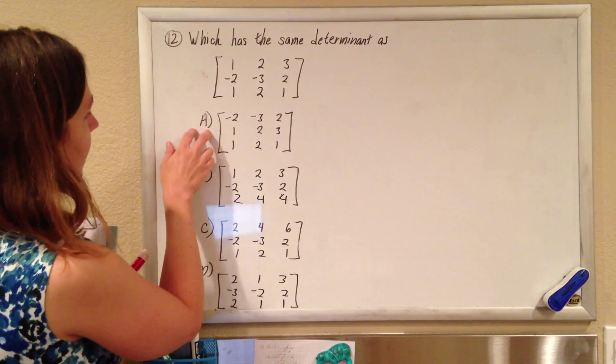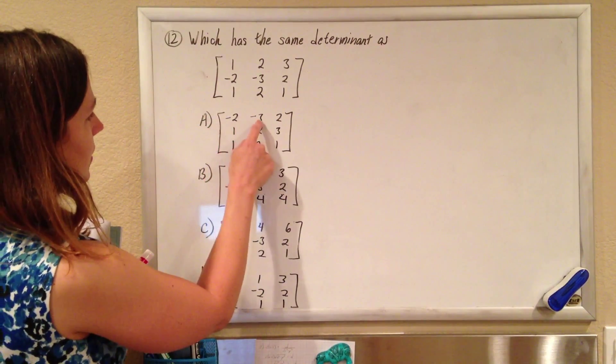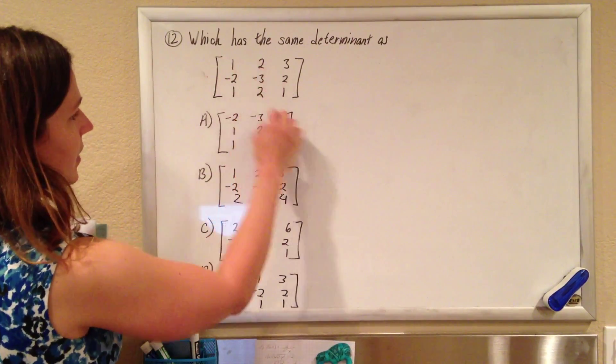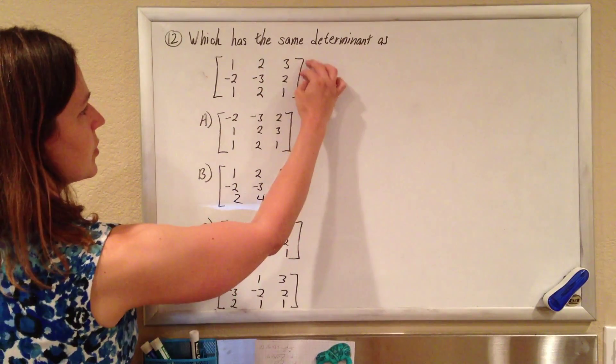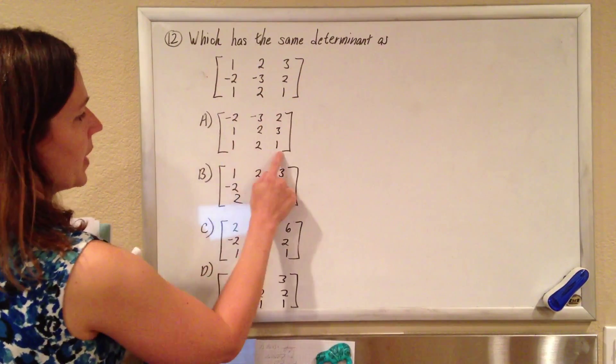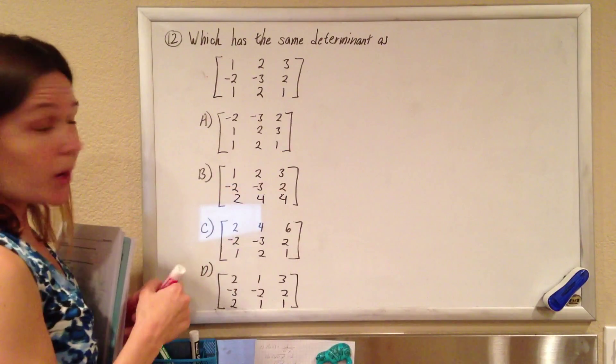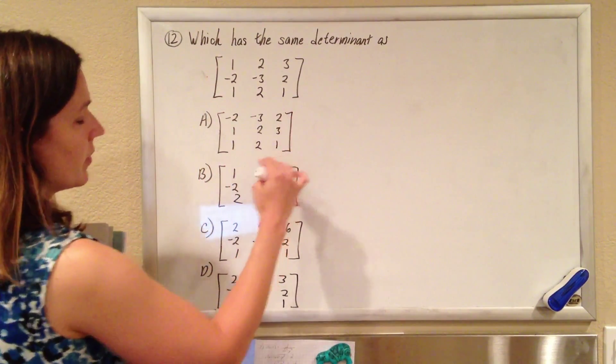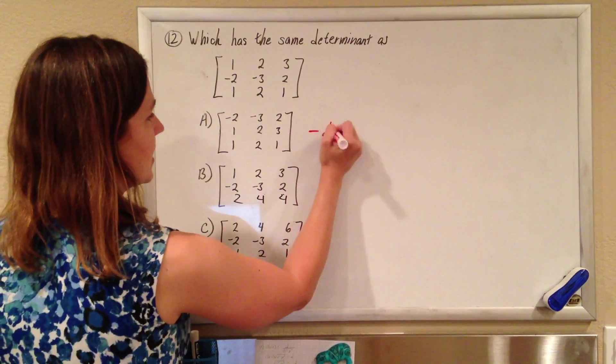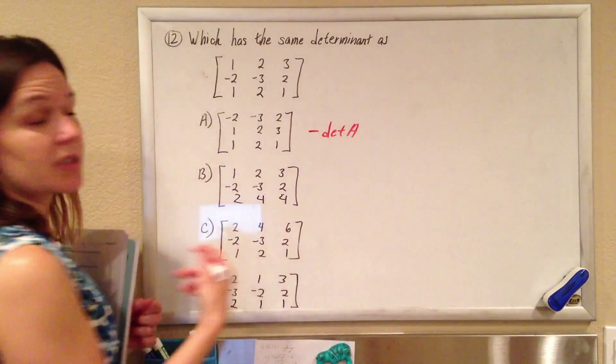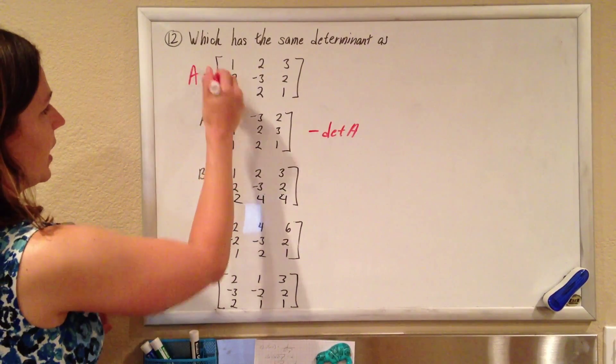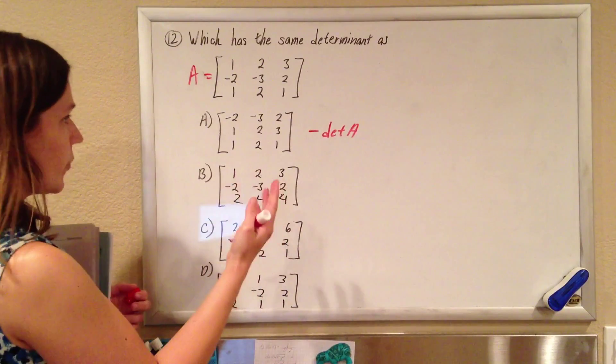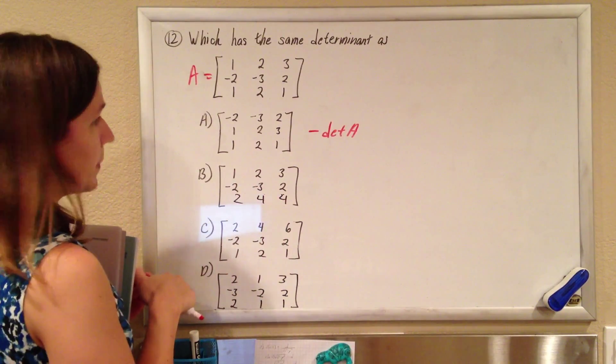So if we look at part A, we have negative 2, negative 3, 2. Hey, that was the second line, and 1, 2, 3 was the first line. So they just interchanged the first two rows, and they kept the bottom one the same. So we have a property that says if we switch two rows of a matrix, the determinant is actually equal to negative the determinant of the original matrix. So if we call this matrix A, then the determinant of this would actually be negative the determinant of A. Okay, so can't do that one.